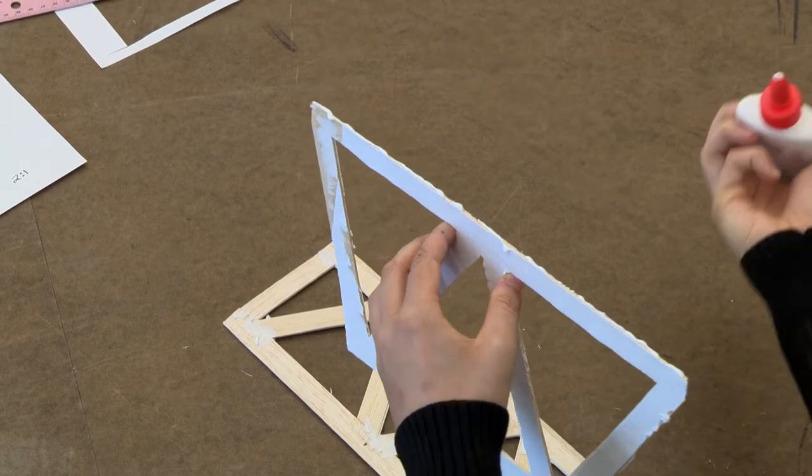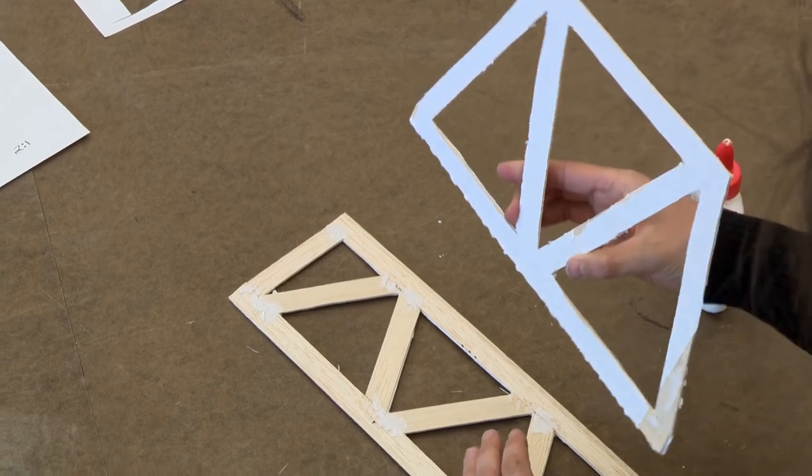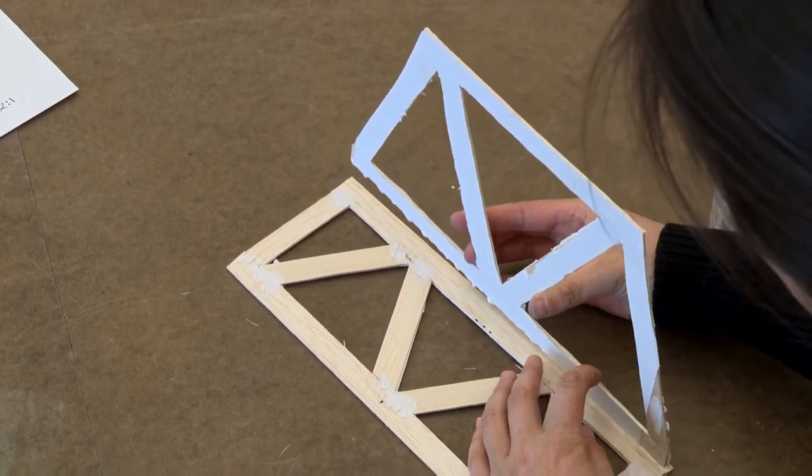You can either construct the whole bridge at once, so you put both sides up, and then if you have an extra set of hands, you can have someone put the top piece on. Or you can construct one side at a time if it's just you working on the project.